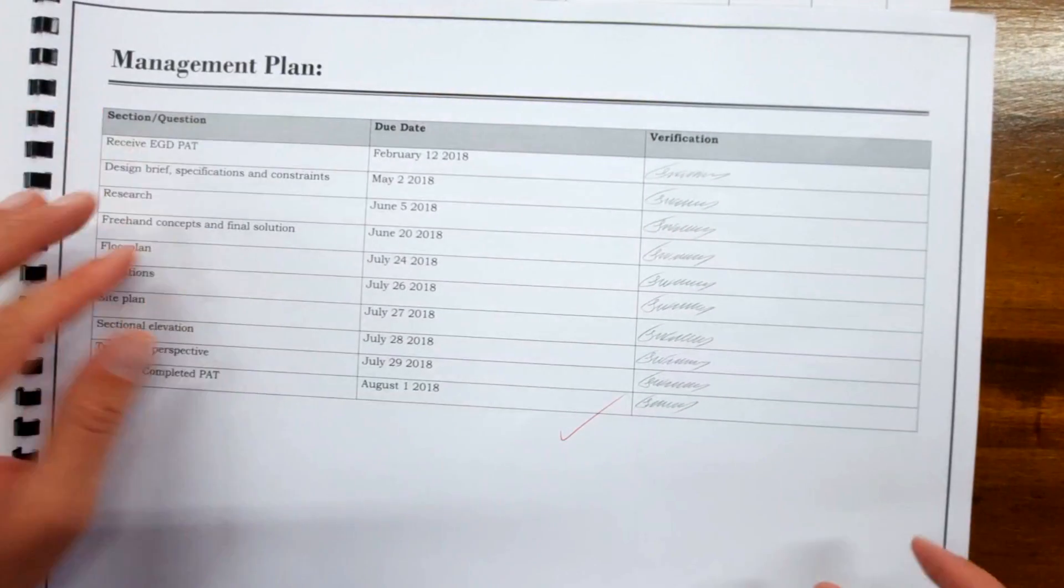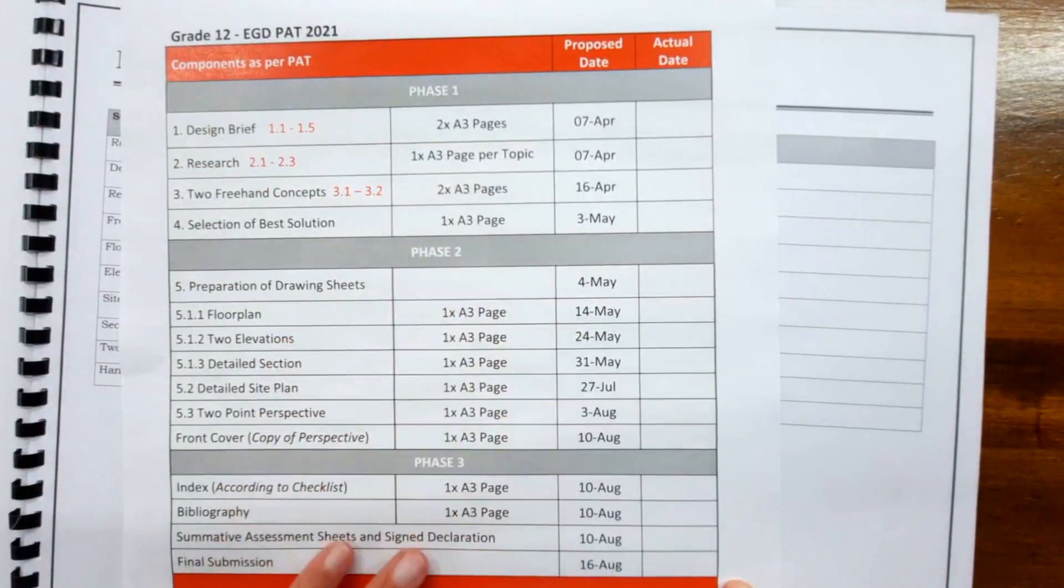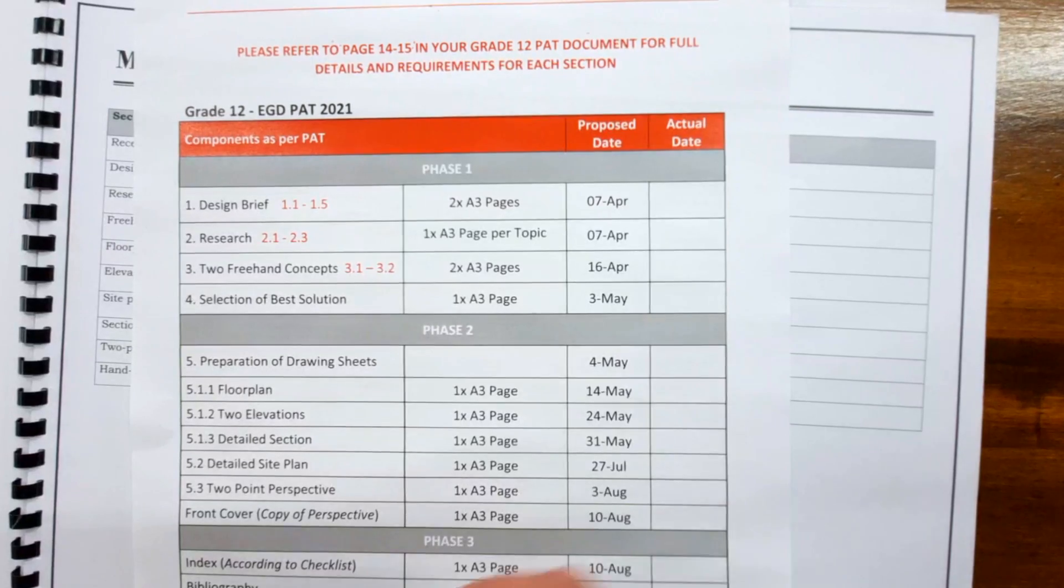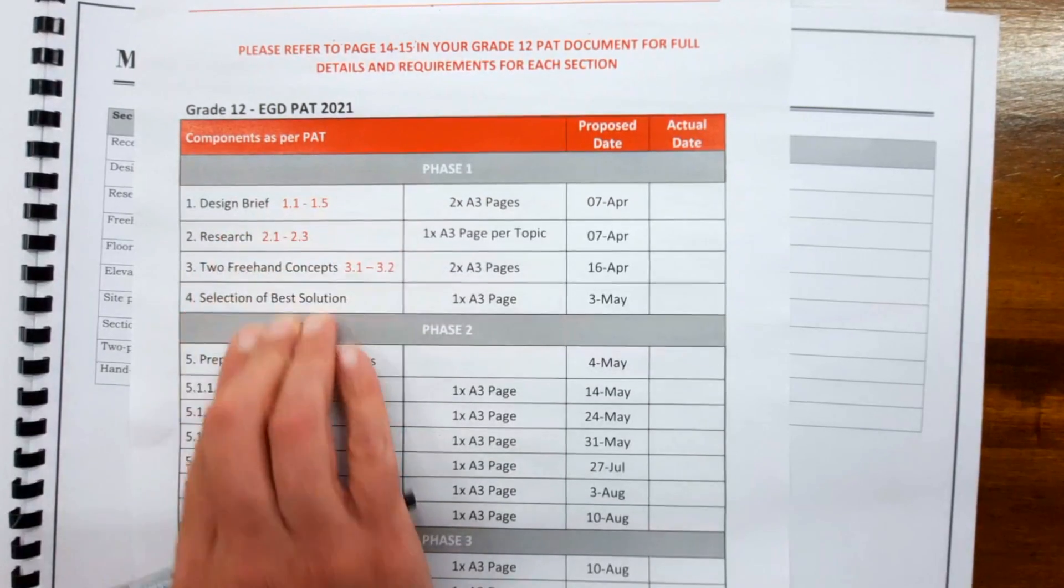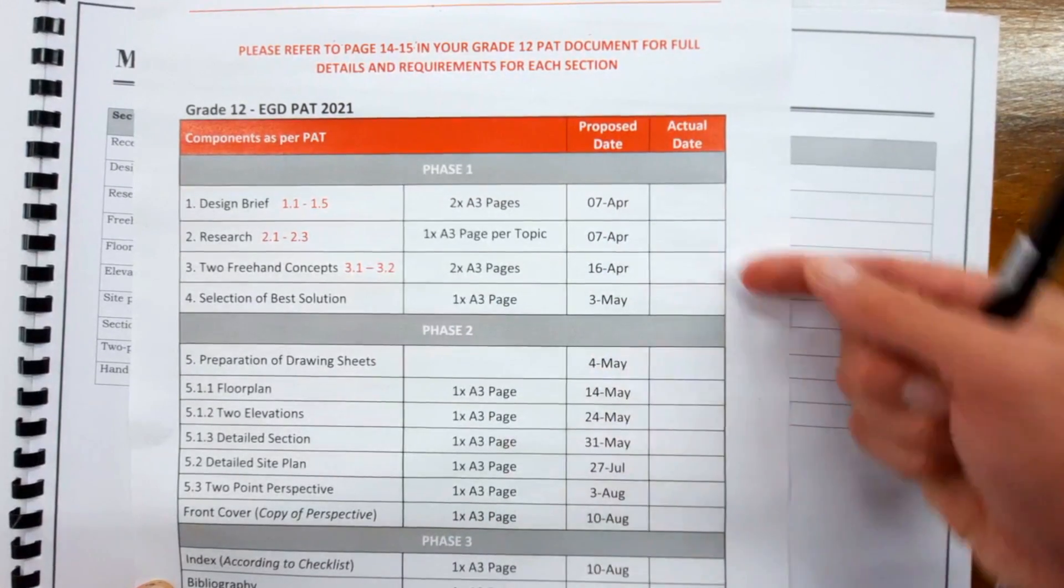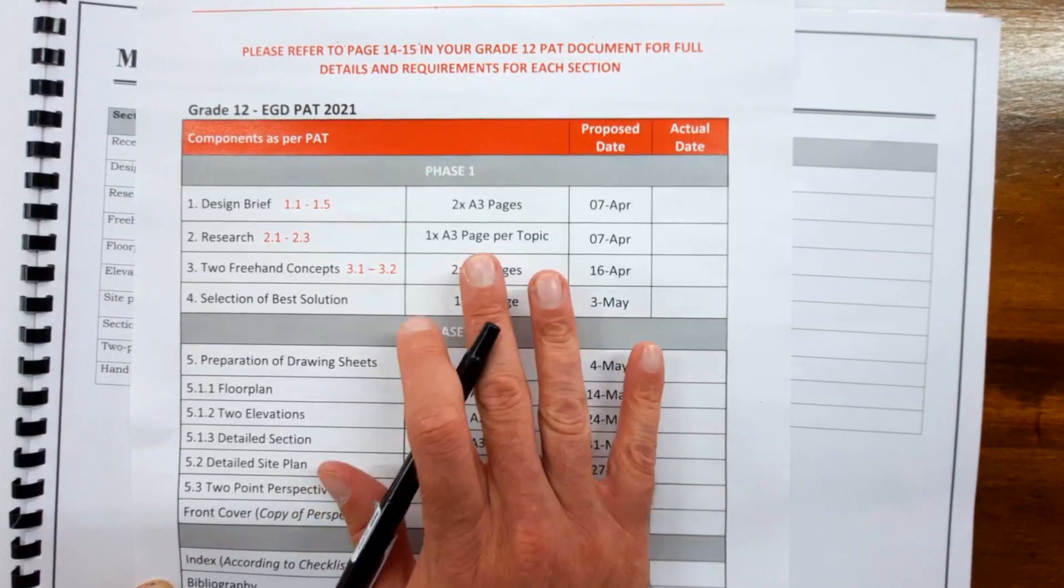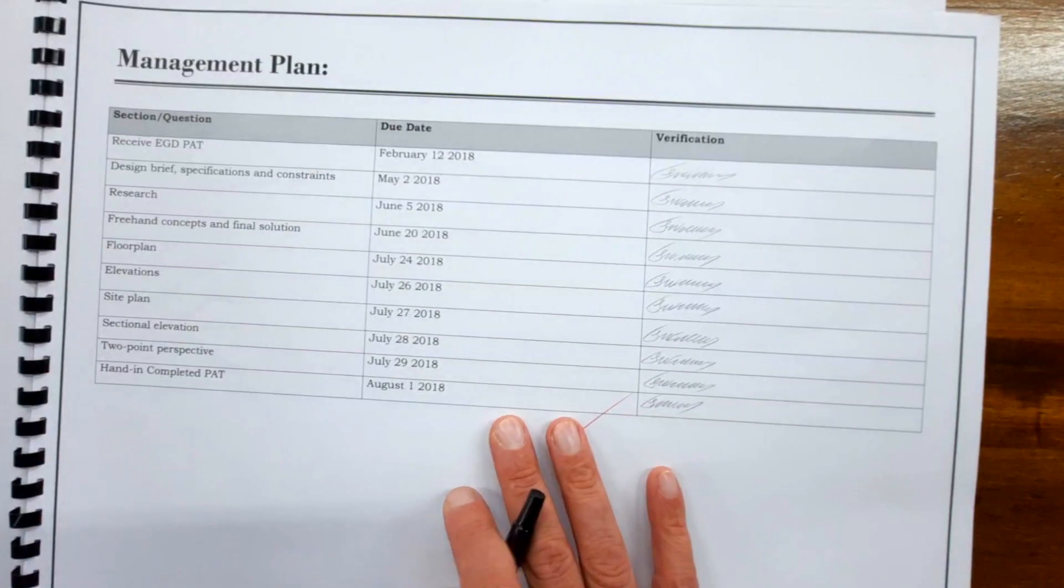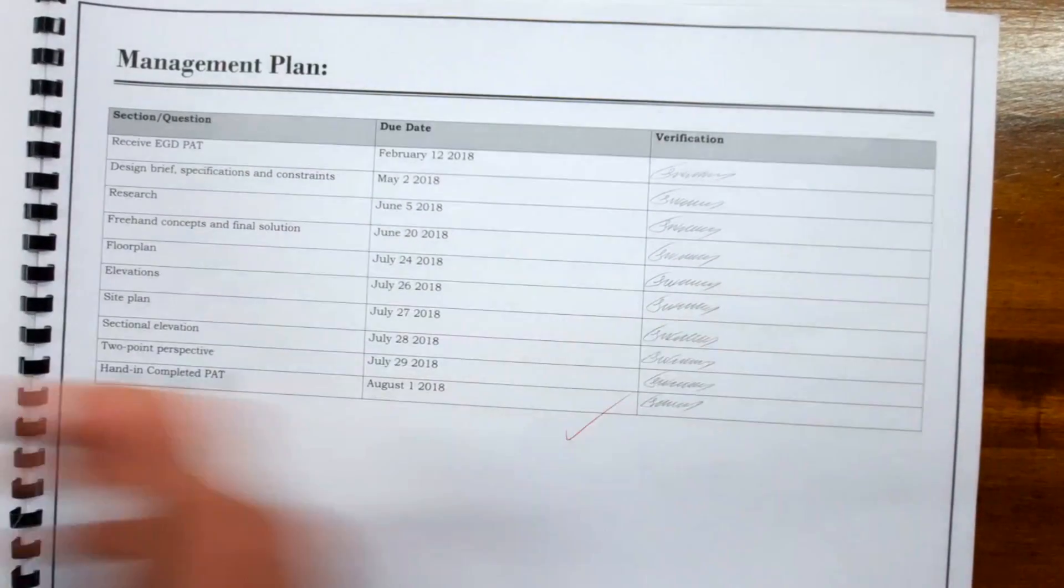The management plan is also part of this very first part. Here's an example of a management plan. I'm going to add a link in the description—the one I've prepared for my students to help them manage their PAT. You have four columns: the components of the PAT you have to adhere to, how many pages they require, your due dates, and where you can add in your actual due dates. Please don't copy mine word for word.